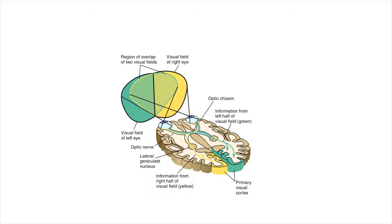The right visual field is shown here in yellow and the left visual field here in green. As you can see, some information from both visual fields goes to both eyes.